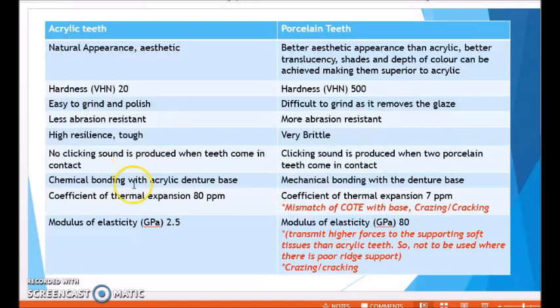There is chemical bonding of acrylic teeth with the acrylic denture base, while porcelain teeth rely on mechanical bonding. The coefficient of thermal expansion of acrylic is 80 parts per million, while that of porcelain is 7 parts per million. This mismatch with the base can cause crazing and cracking. The modulus of elasticity is 2.5 GPa for acrylic teeth and 80 GPa for porcelain teeth, meaning porcelain transmits higher forces to the supporting soft tissue and should not be used where there is poor ridge support.